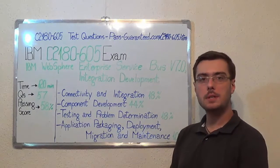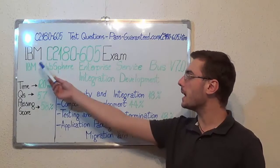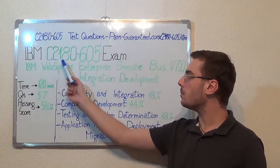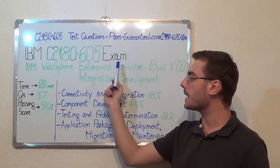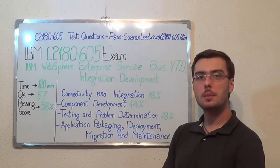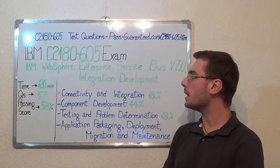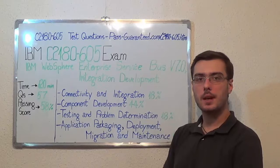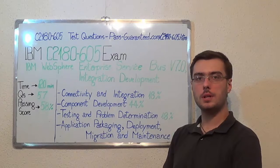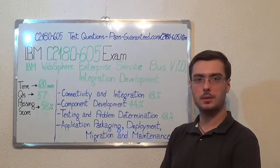You can visit PassGuarantee.com to successfully pass the IBM C2180-605 exam. Go to PassGuarantee and get the C2180-605, which covers all these exam topics. Thank you very much for watching, and please stay tuned for our next feature presentation.